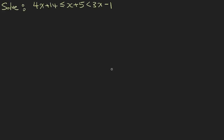Hi. Now let's see how we can solve simultaneous linear inequalities. For example, you are given a question with three parts and you are asked to find x. To do this, we need to break down this inequality into two equations. The first one will be 4x plus 14 is less than or equals to x plus 5. The second one will be x plus 5 is less than 3x minus 1. After we solve these two equations, we can compare what we have and determine the likely values for x.